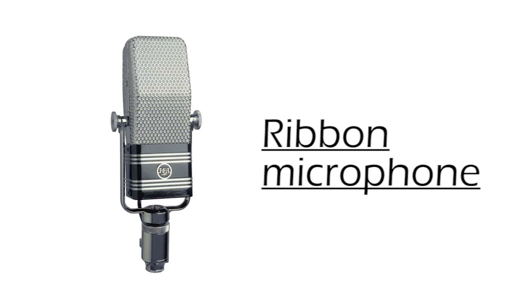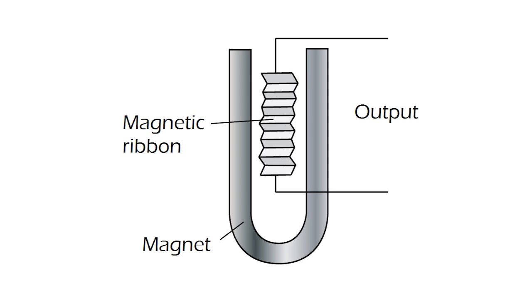Ribbon microphones function under a similar principle. As a diaphragm, they use a magnetic ribbon, which is placed between the two poles of a magnet. The sound makes the magnetic ribbon vibrate, and the magnetic field fluctuations caused by the interaction between the vibrating ribbon and the magnet creates a voltage.